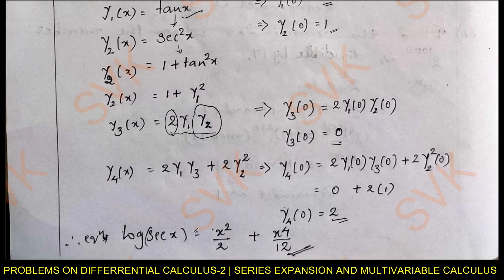Substituting all values into the McLaurin expansion for log(sec x): y(0) = 0, y₁(0) = 0, y₂(0) = 1, so the x²/2! term gives x²/2. y₃(0) = 0, so that term vanishes. The x⁴/4! term gives (x⁴/24)·2 = x⁴/12. Therefore, the final answer is log(sec x) = x²/2 + x⁴/12.